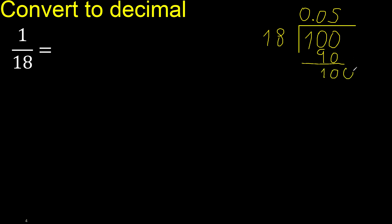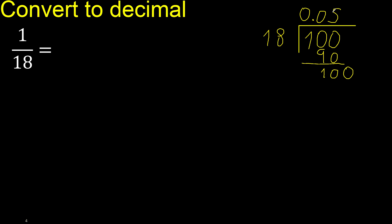Therefore complete — always complete with 0 point. So we have 0.05 here. 18 multiplied by 5 is 90.